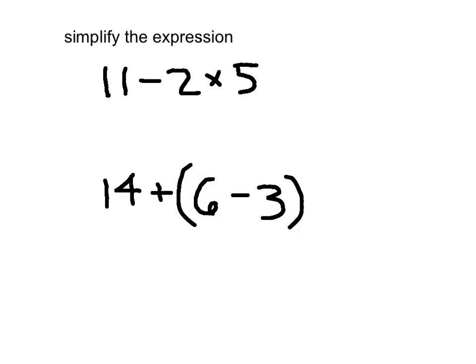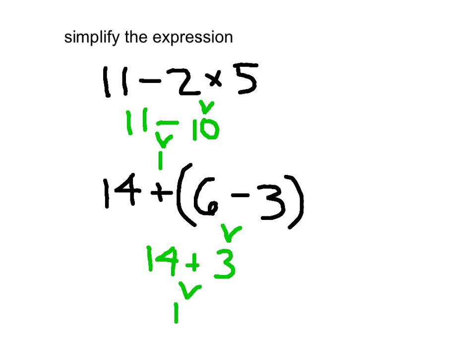Oftentimes you're going to come across instructions that say to simplify the expression. If we were to simplify 11 minus 2 times 5, we know by the order of operations that 2 times 5 is 10, and that's what we have to do first. Then we have 11 minus 10, which is 1. With the next expression, we clear our parentheses first — 6 minus 3 is 3, and then 14 plus 3 is 17. When we are simplifying or evaluating an expression, all we're doing is finding its value. It's a lot easier if we put things in parentheses to be considerate to our reader.